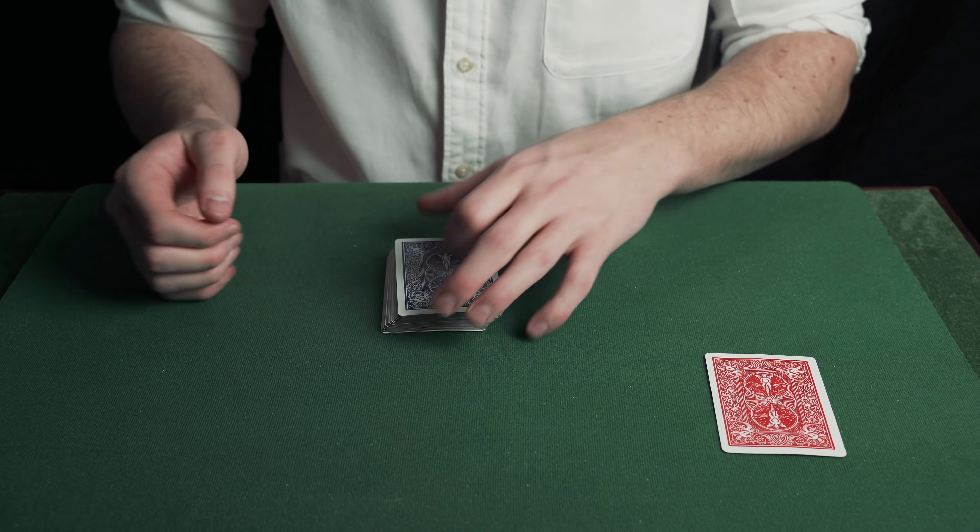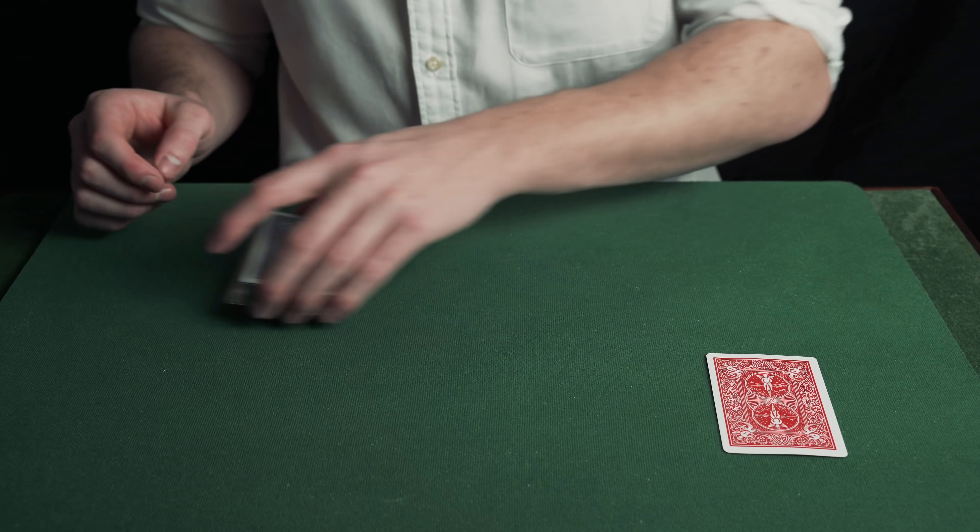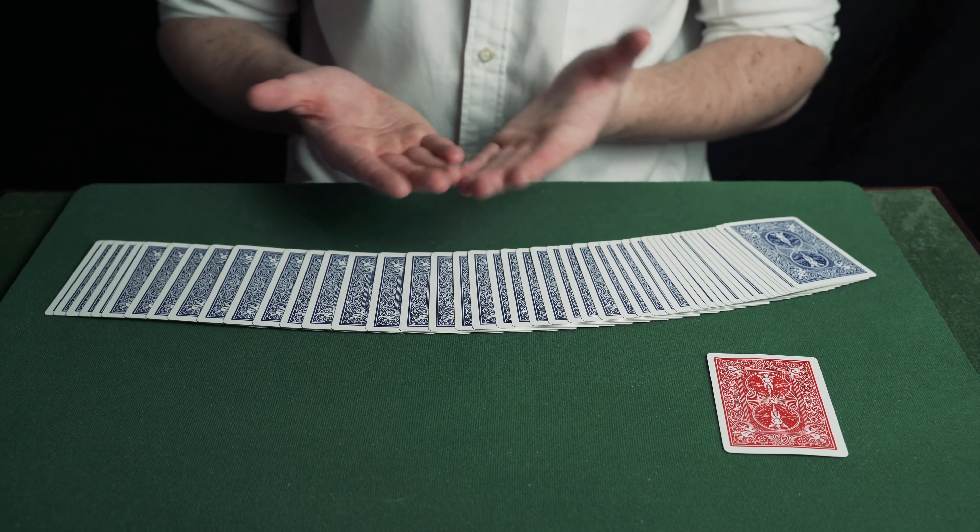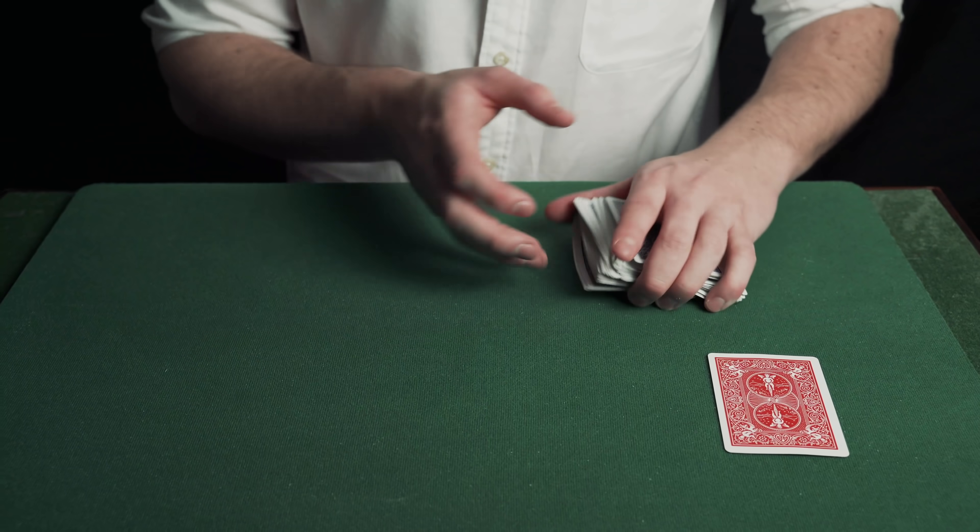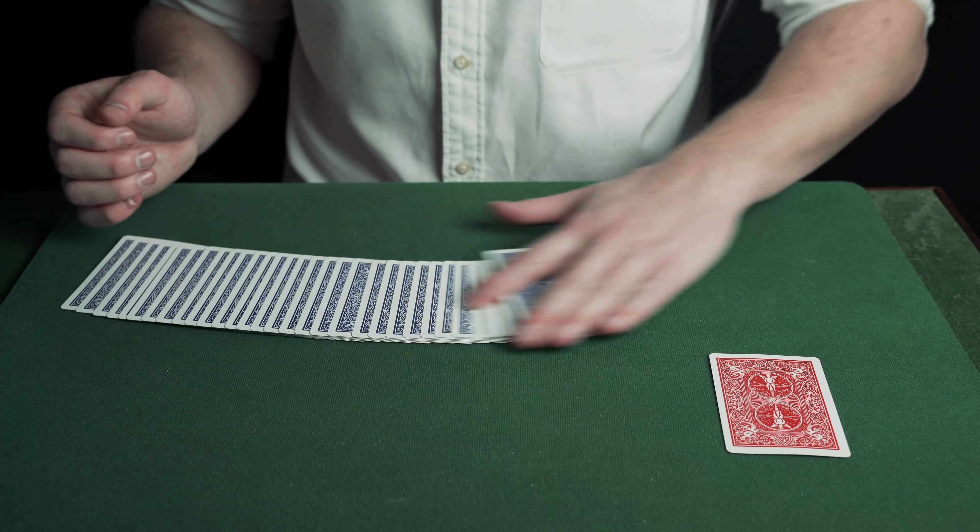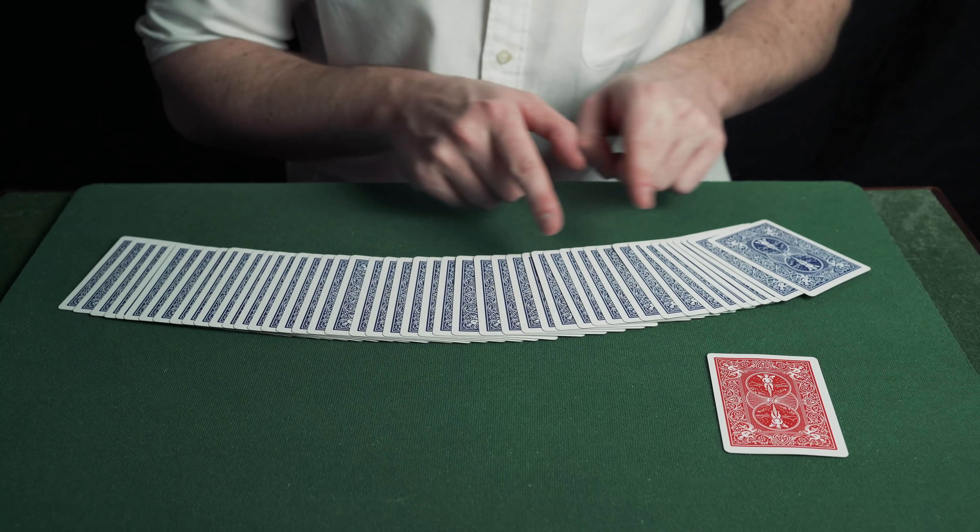Now say you're going to do the trick again. Spread out the cards and show that there's no red card. Try this again and just when your spectator thinks you've got it wrong, turn over the red card and show that it's their ten of diamonds.